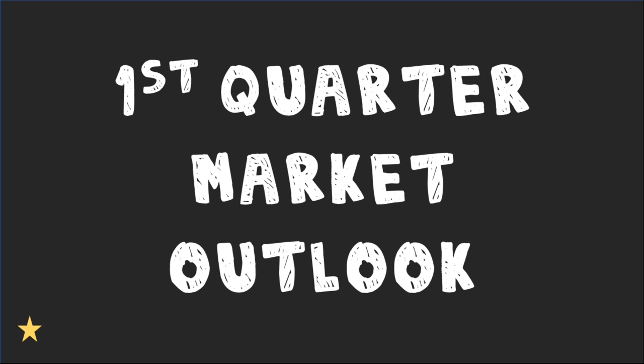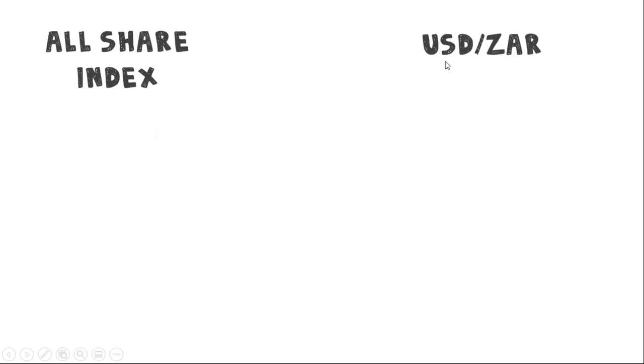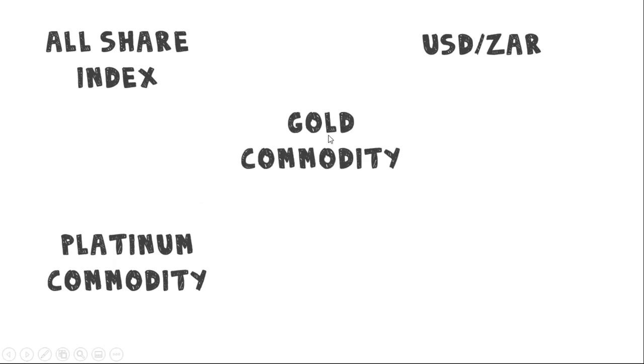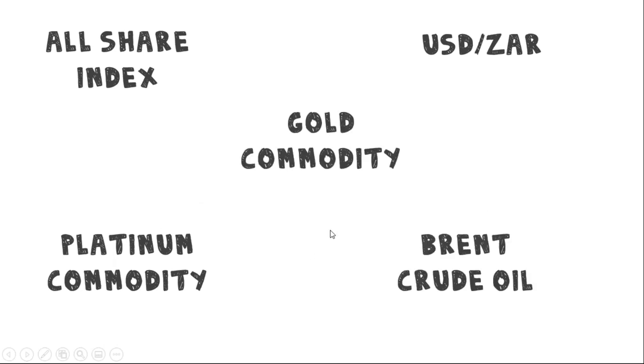So we will have — this is the first quarter one — we'll have one in the second quarter around March/April, to see what the impetus is for the second quarter and if it still stands as anticipated. So our first quarter market outlook is going to be looking at the All Share Index, USD/Rand, Platinum commodity, Gold commodity, and Brent Crude Oil.